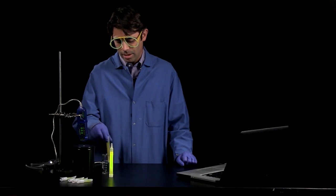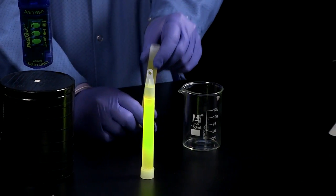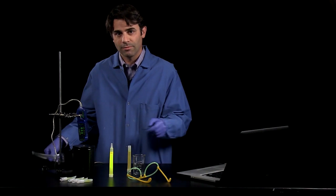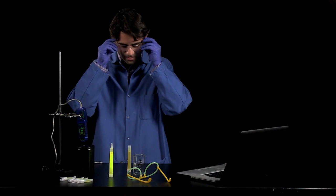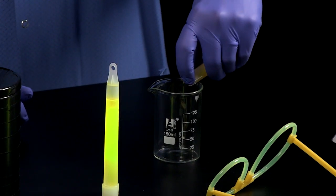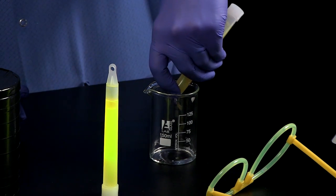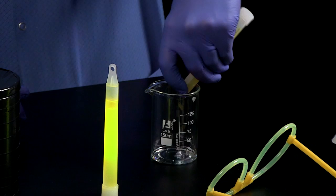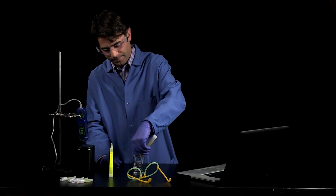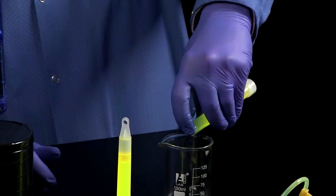Now, to do this, I want to separate the reactants. So I took a glow stick, and I cut the top off, and I'm going to pour one of the reactants into the beaker, and then I'm going to break the vial and pour the other reactant in.